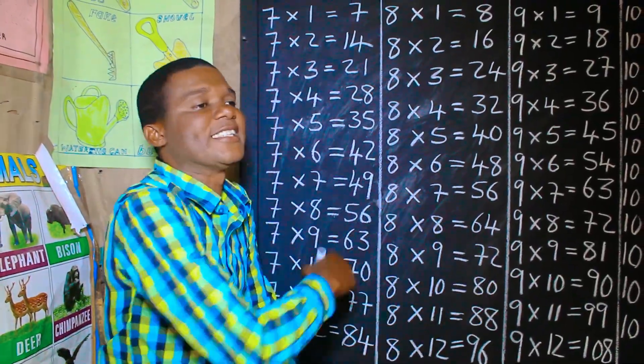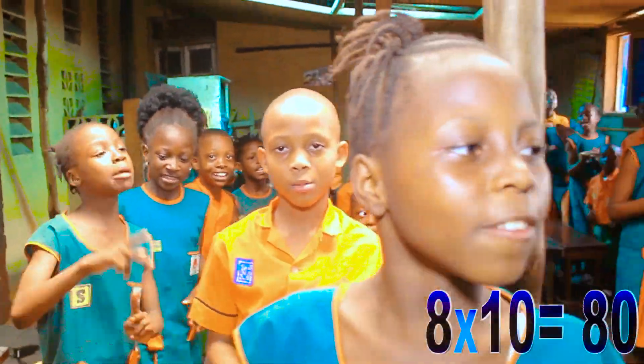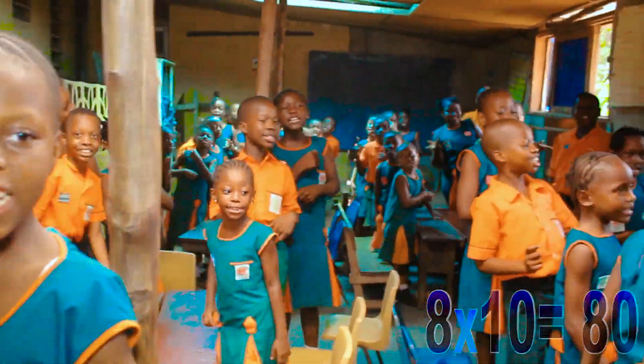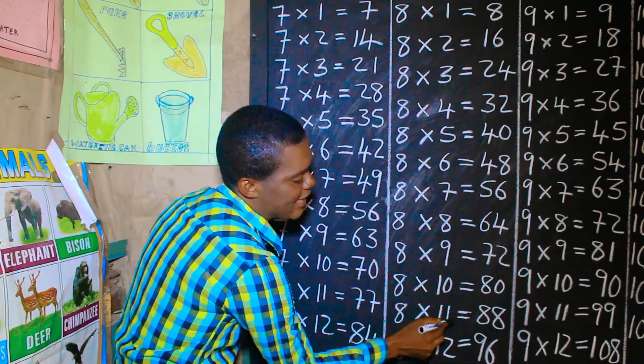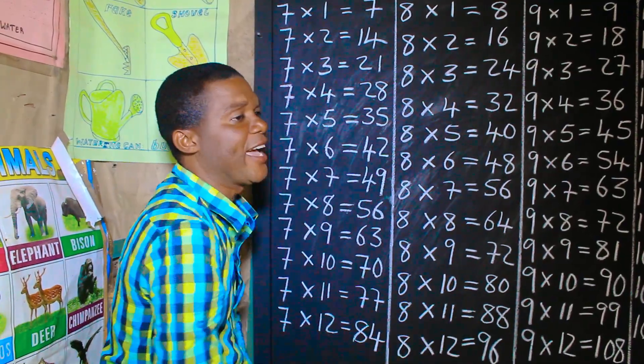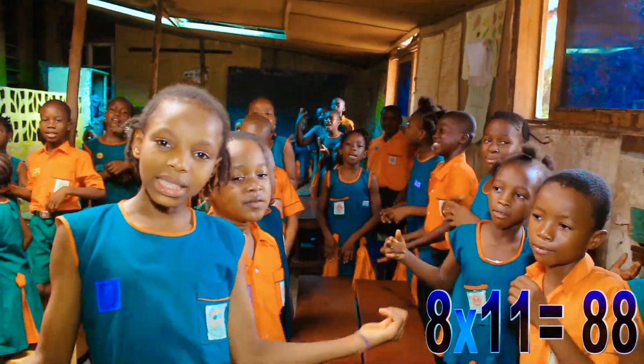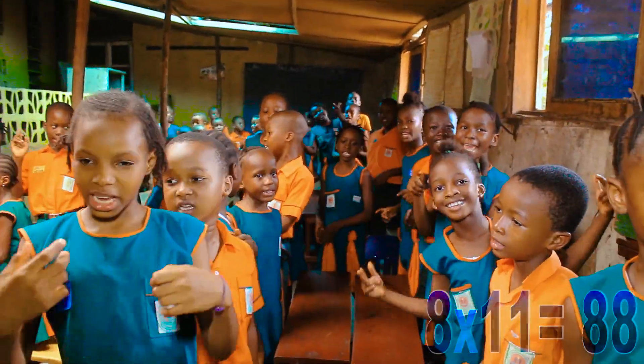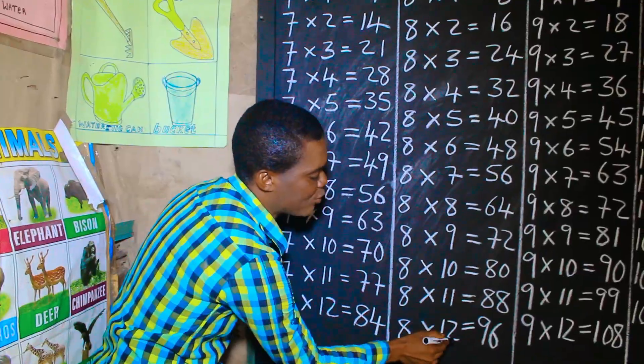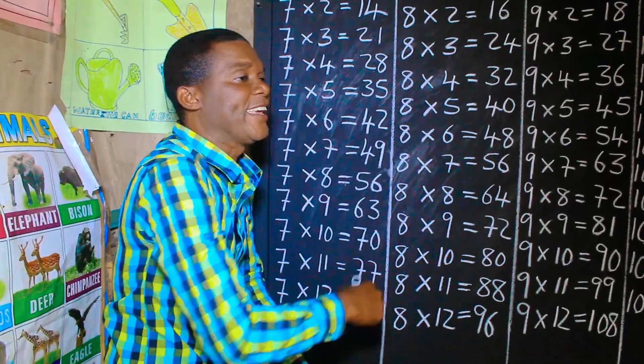8 times 10 is 80. 8 times 11 is 88. 8 times 12 is 96.